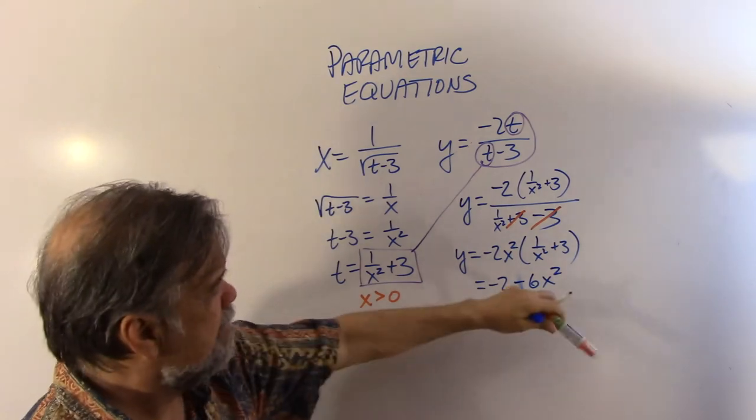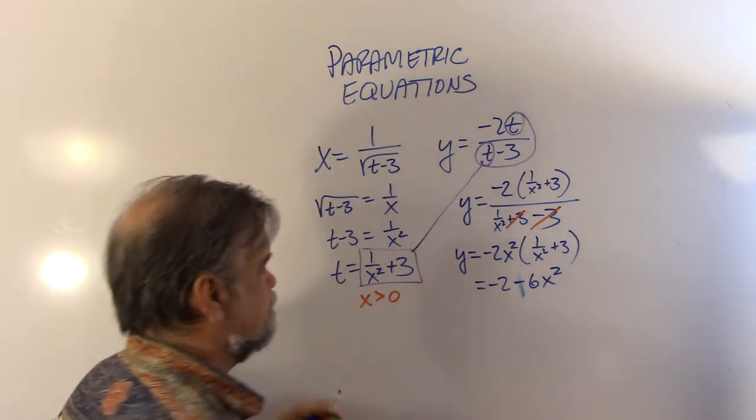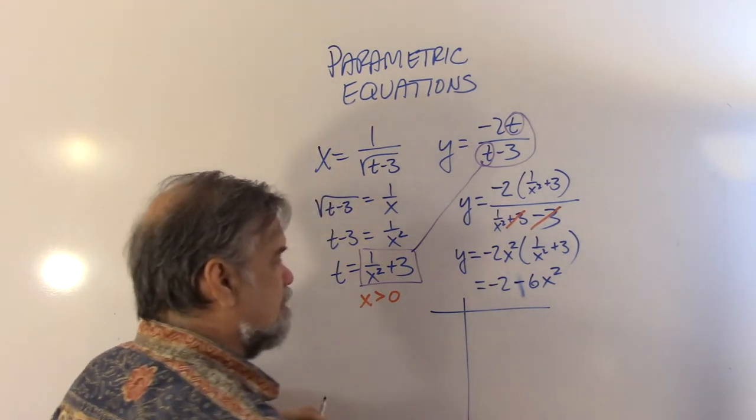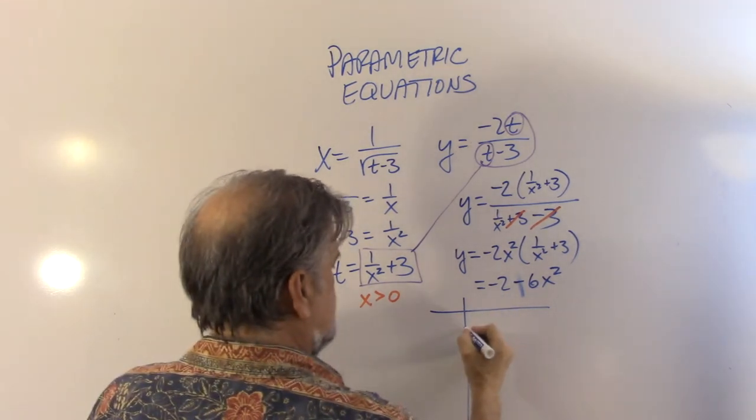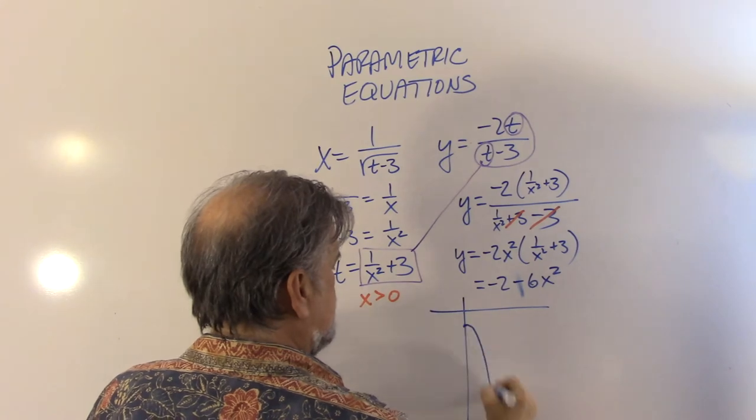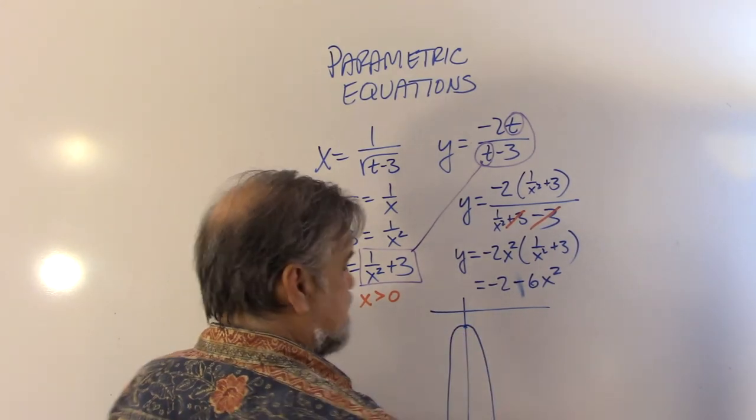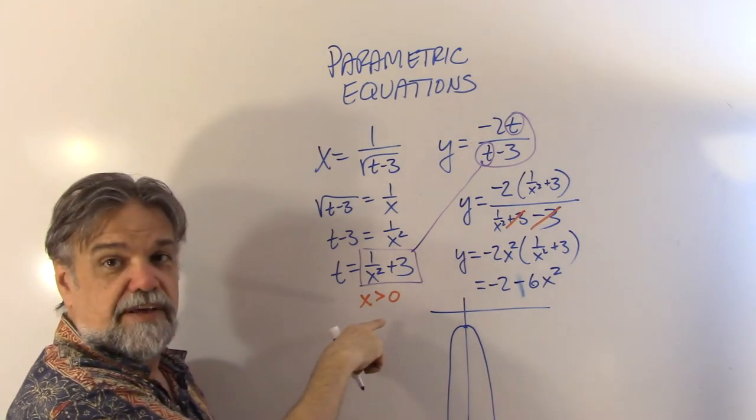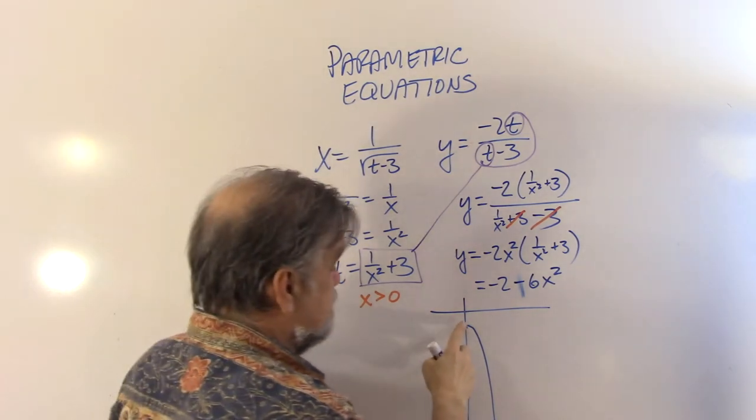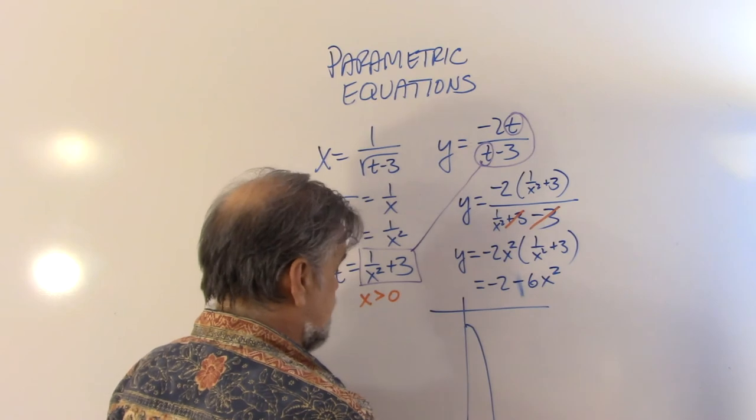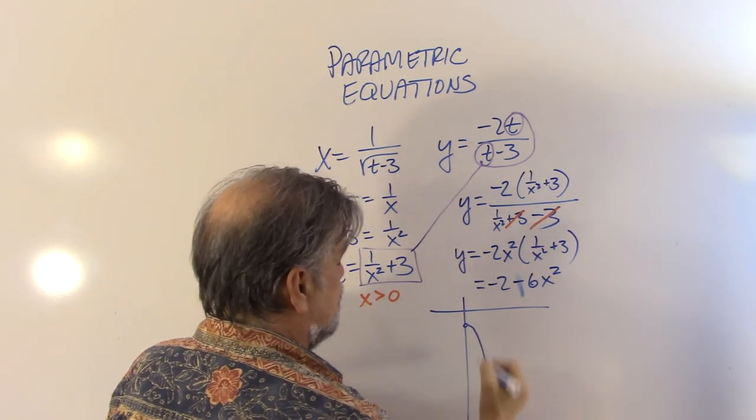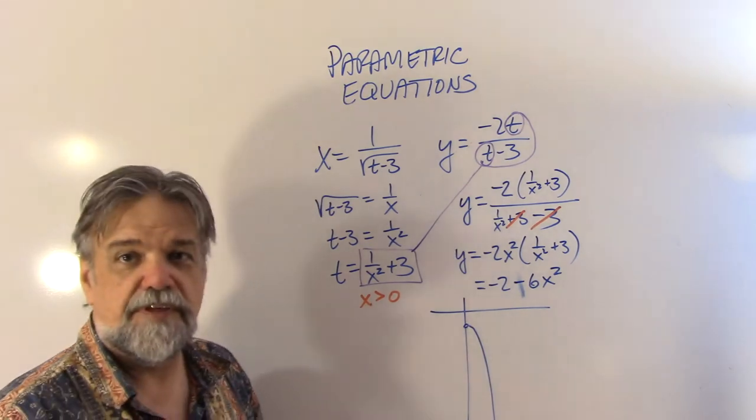And I know what that is. That is a parabola whose vertex is at the point 0, negative 2, and it's opening up downward. Except, remember this: remember the fact that x has to be greater than zero? It means it's actually just half of that parabola. Matter of fact, it's not even zero. I'm going to put a little empty circle right there. There we go. That looks better.